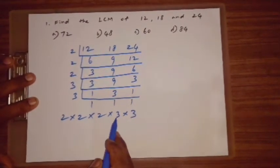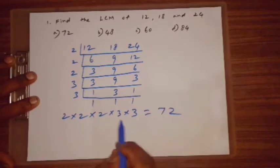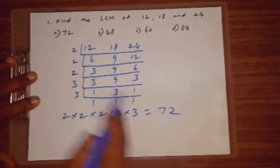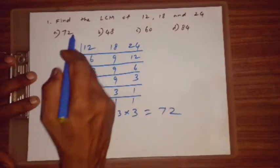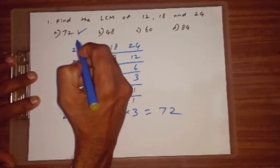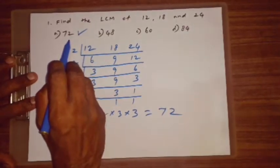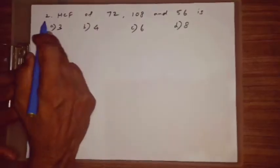24 twos are 72. Answer is A: 72. Correct answer Q1.